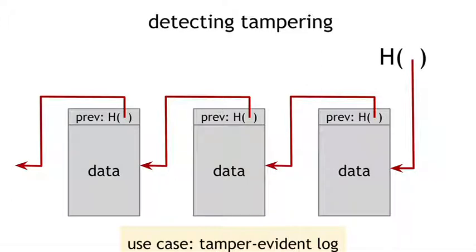A use case for a blockchain like this is a tamper-evident log. That is, we want to build a log data structure that stores a bunch of data so that we can add data onto the end of the log, but if somebody goes later and messes with data that is earlier in the log, we're going to detect it — that's what tamper-evidence means. To understand why a blockchain gives us this property, let's ask what happens if an adversary wants to go back and tamper with data in the middle of the chain.